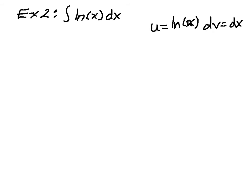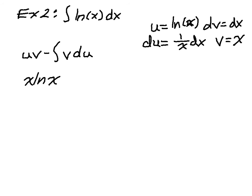So occasionally this will happen. And now du is 1 over x dx, and v is just x. And so from here, what I'm going to do is, again, integration by parts is u v minus the integral of v du. So I end up with x natural log of x minus the integral of v, which is x, and then du, so 1 over x dx.